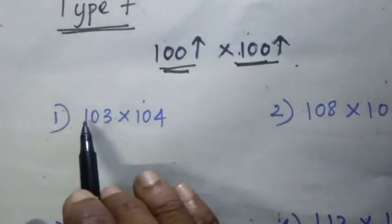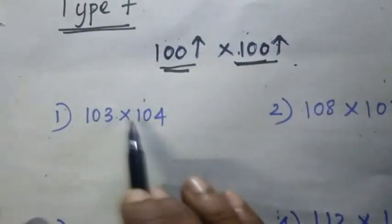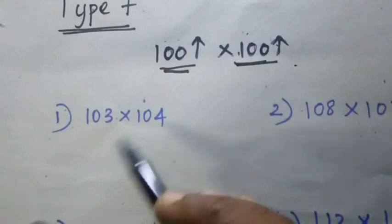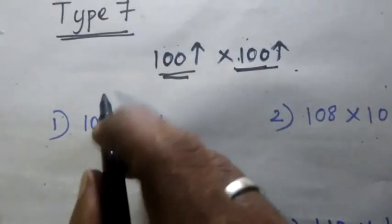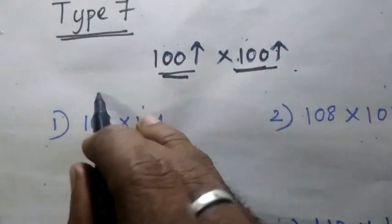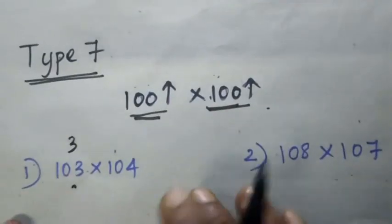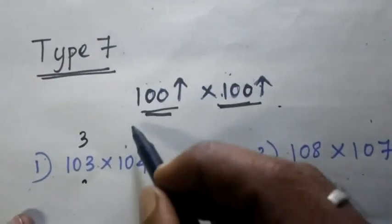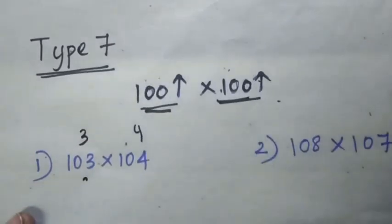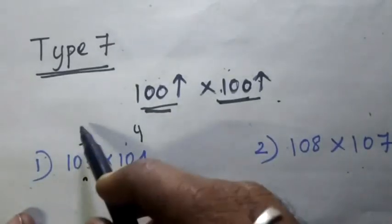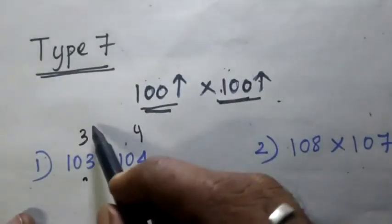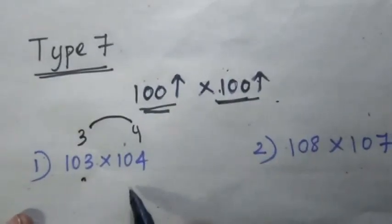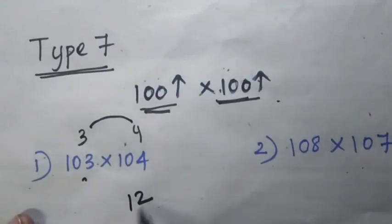The first model is 103 and 104. The base is 100. The difference is 3 and 4. So 3 into 4.